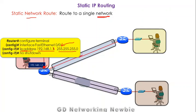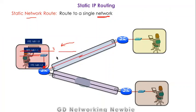After assigning the IP address, we also need to activate the interface using the no shutdown command. This brings the interface to the up state so it starts functioning. We then assign IP addresses to all other interfaces — such as Serial 0/0 — using the same commands, making sure each interface's address is within its corresponding subnet.